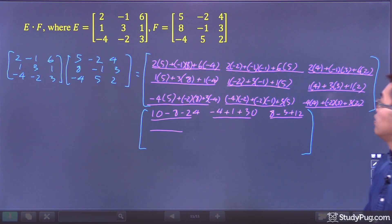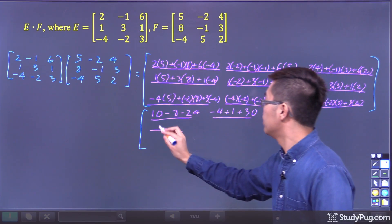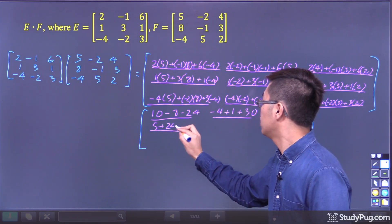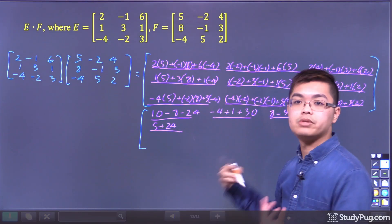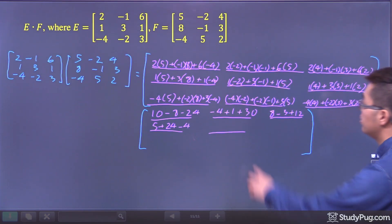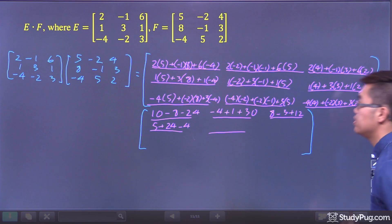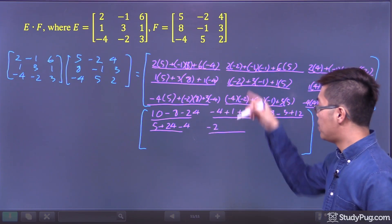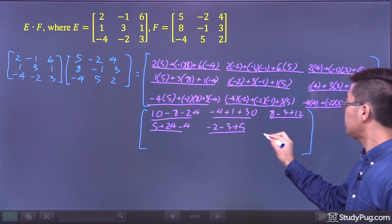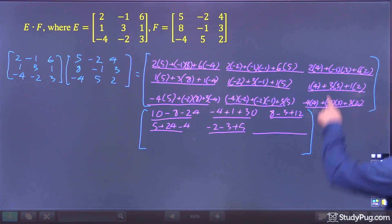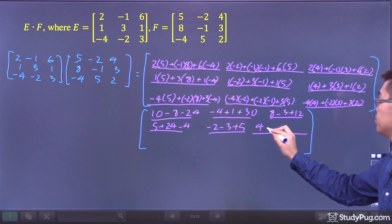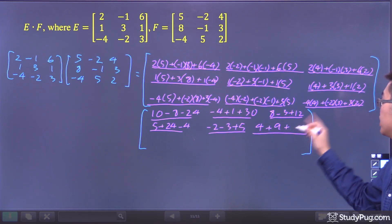For the second row: 1 times 5 is 5, plus 3 times 8 is 24, plus 1 times negative 4 is negative 4. The second row middle entry: 1 times negative 2 is negative 2, minus 3, plus 5. The second row last entry: 1 times 4 is 4, plus 3 times 3 is 9, plus 1 times 2 is 2.